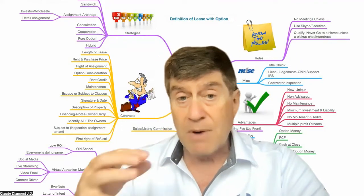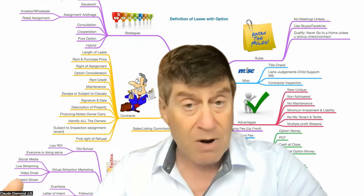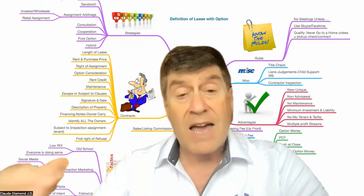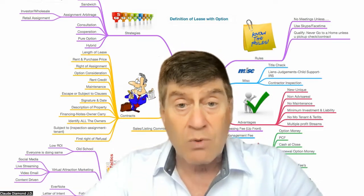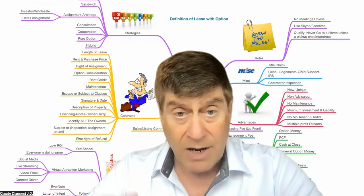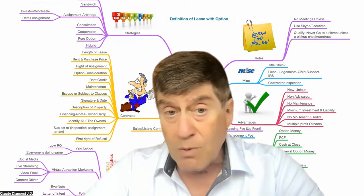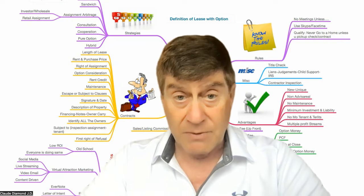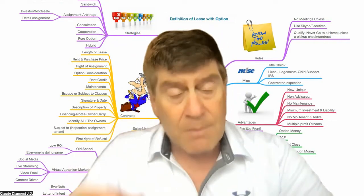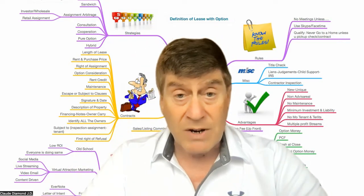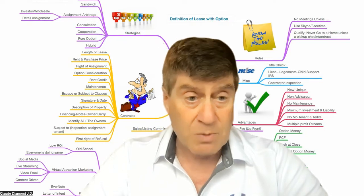You can get option money, positive cash flow, and cash at the close of the property. It's probably the smartest way to do a starting lease purchase transaction. There are many other ways to do it, and we'll talk about them in other videos. But starting out, the sandwich lease is one of the easiest ways to get involved in lease purchasing.